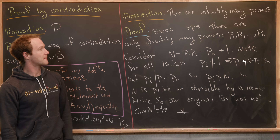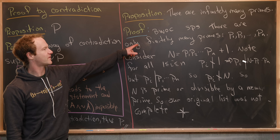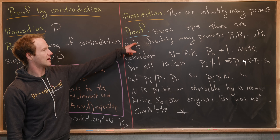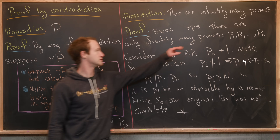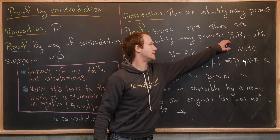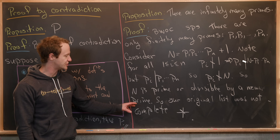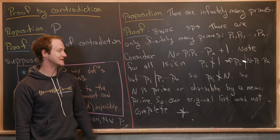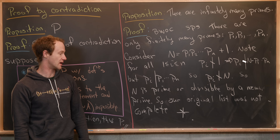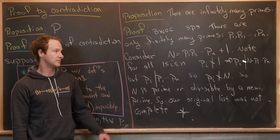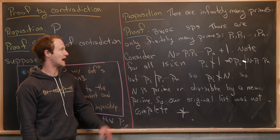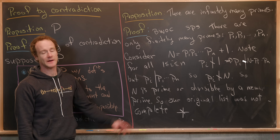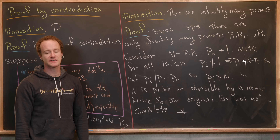To summarize: we first started off supposing that we had a complete list of primes, and then we showed that we actually did not have a complete list. But that means there must be infinitely many primes, by way of contradiction.